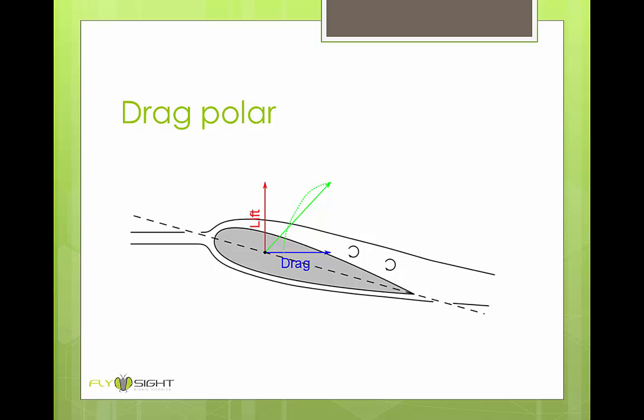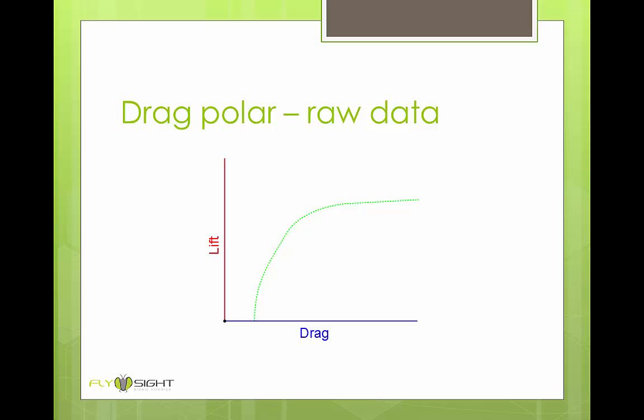When we get to the stall point, the green line starts bending over to the right because drag is going up quickly, but lift is not. If we take the plot and pull it away from the diagram, this is what it looks like.